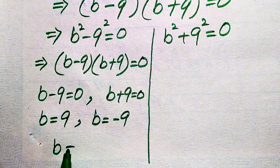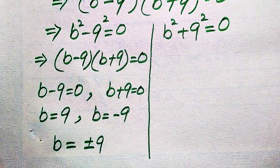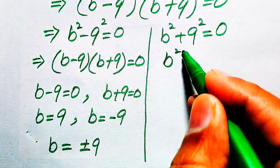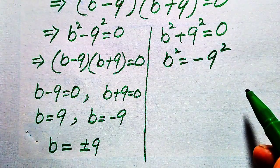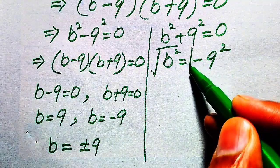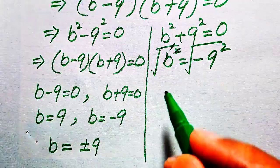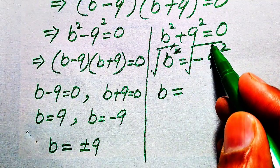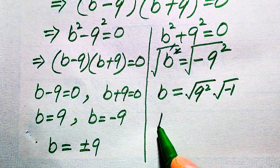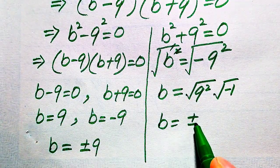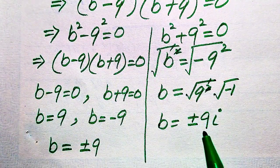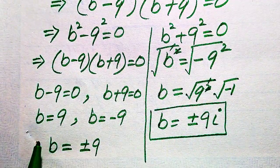For Case 2, we move 9² to the right hand side, giving b² equals minus 9². To find b, we take the square root of both sides. The square root of b² gives b, and on the right side we write minus 9² as minus 1 times 9². Taking the square root gives plus or minus 9 times the square root of minus 1, and since the square root of minus 1 equals i (iota), we get b equals plus or minus 9i.